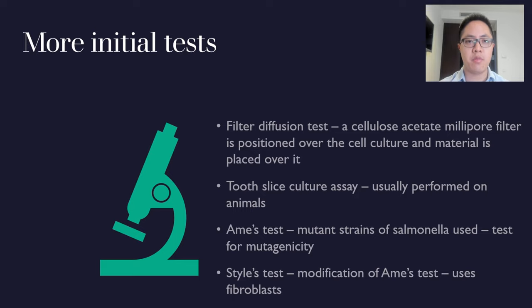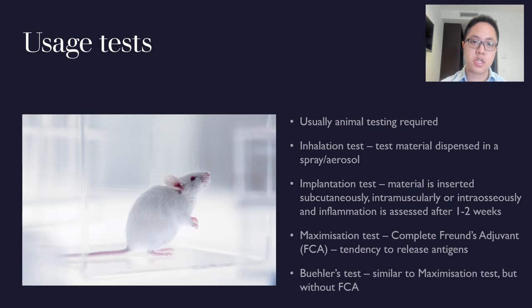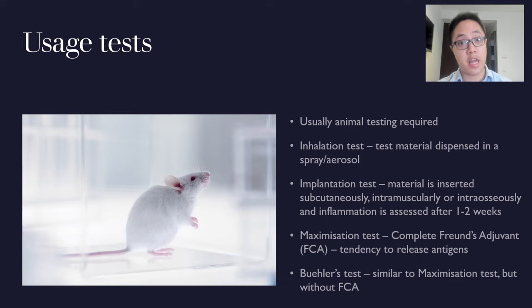Additional initial tests include filter diffusion tests, tooth slice culture assays, AMES tests, and HALO tests. There are a lot of tests available. Usage tests generally involve animals — for instance, the inhalation test, where the test material is dispensed as a spray or aerosol and an animal's response is measured. This is the next level of testing compared to initial tests.